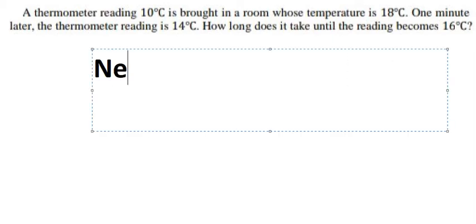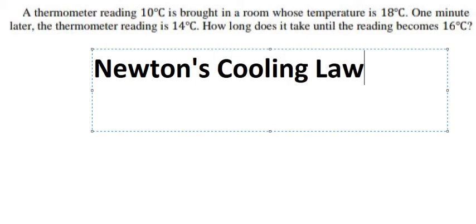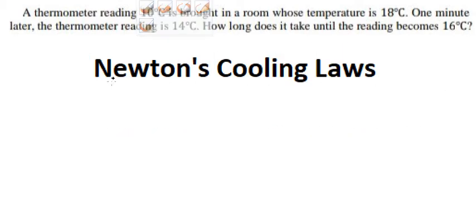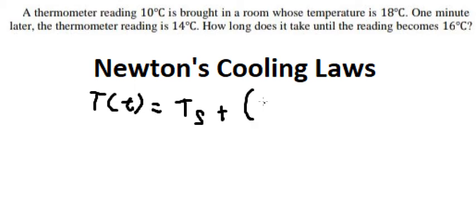We apply the formula. T(t) equals T_H plus (T_D minus T_H) multiplied by e to the power of negative kt.